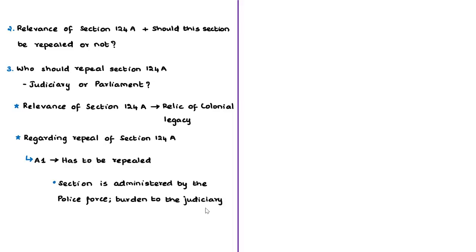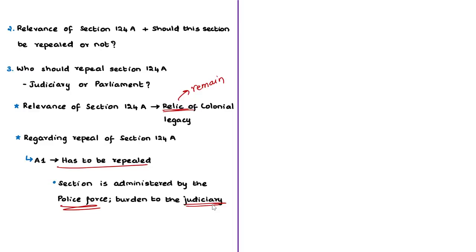The next question is whether Section 124A should be repealed. The authors note it is a remnant of colonial legacy — the British used it to suppress dissent. After independence, political leaders promised to repeal it but it still exists, as leaders believe they need means to control dissent beyond a certain point. One author thinks the section should be repealed, because it is administered by police, rarely ends in conviction, and burdens the judiciary — and since there is no political will in Parliament, the judiciary should repeal it with a five-member or larger bench.